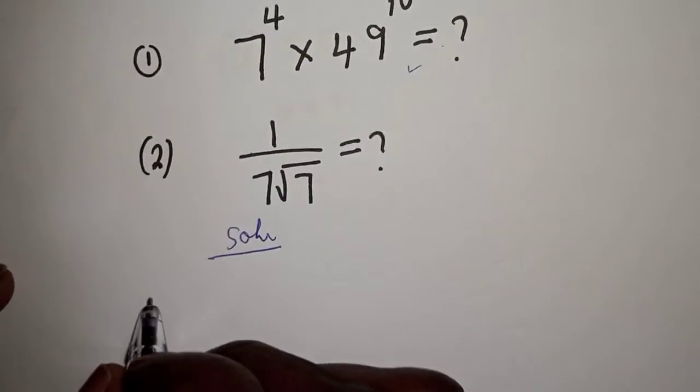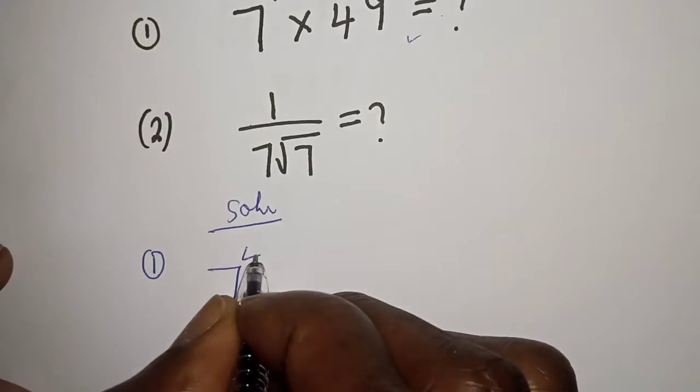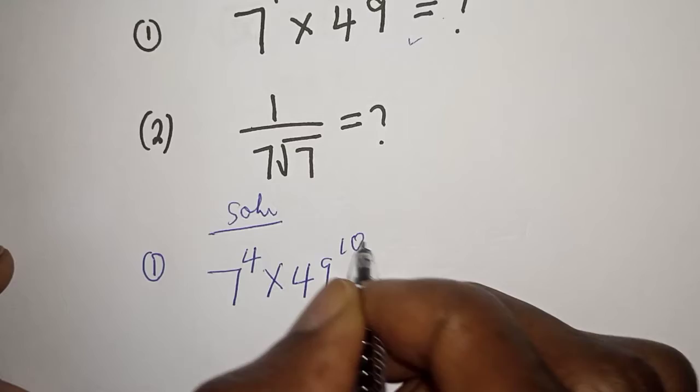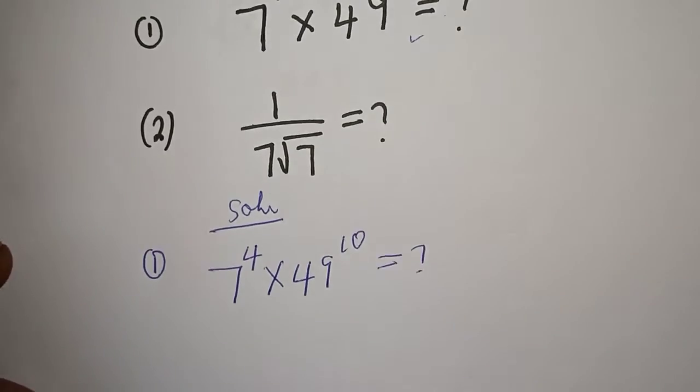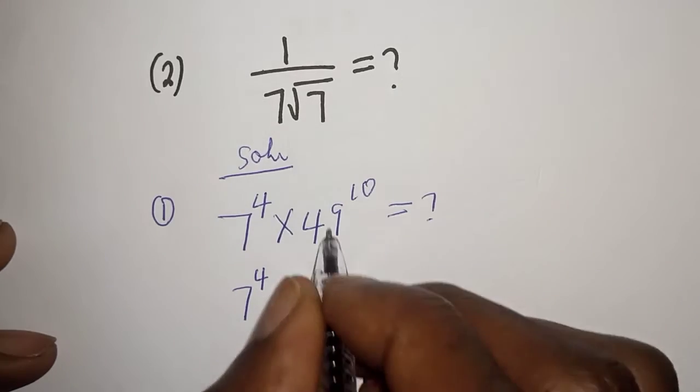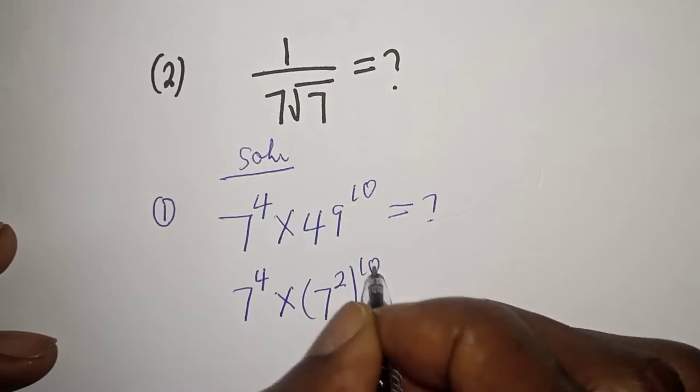Let's consider this first one, 7 raised to power 4 multiplied by 49 raised to power 10 is equal to what? This is 7 raised to power 4 multiplied by 49 is 7 square to the power of 10.